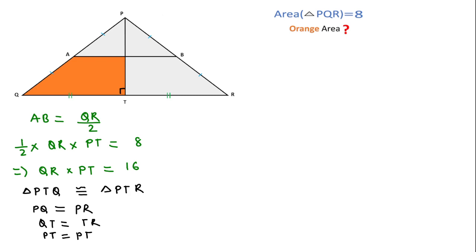This means area of triangle PTQ will be 8 over 2, because these two triangles are equal. This means this triangle area is 4 units and this triangle area is 4 units, so that sum is 8.